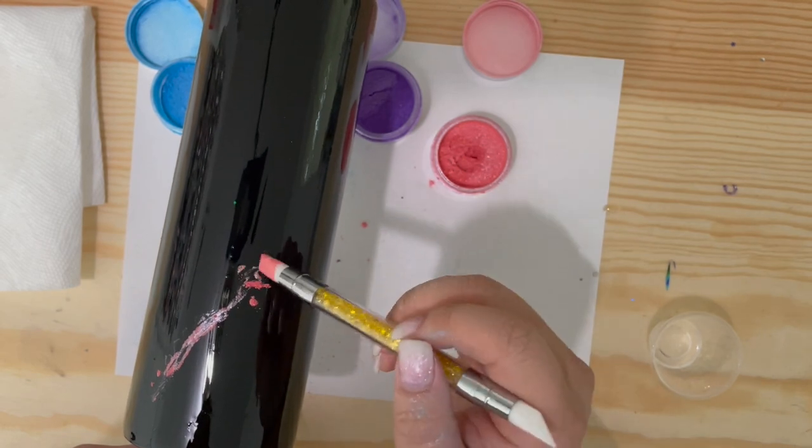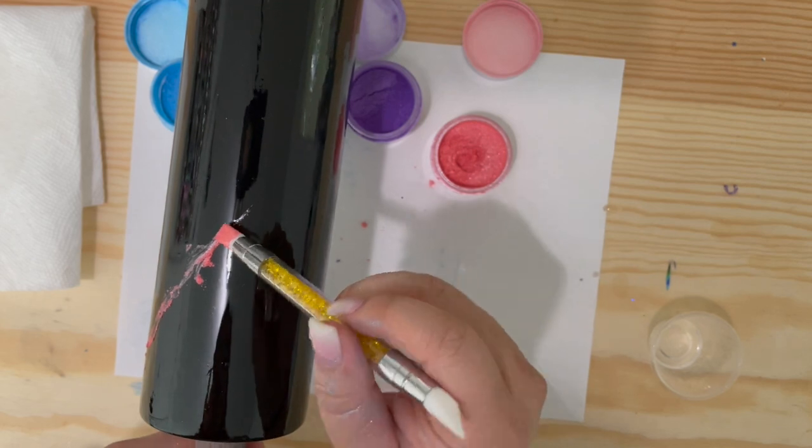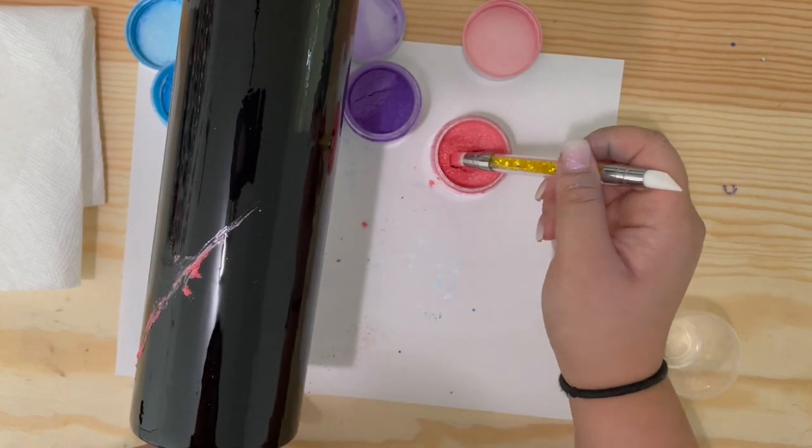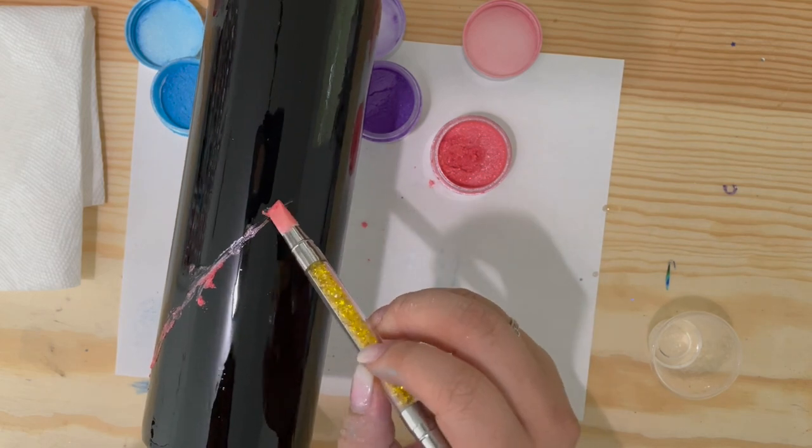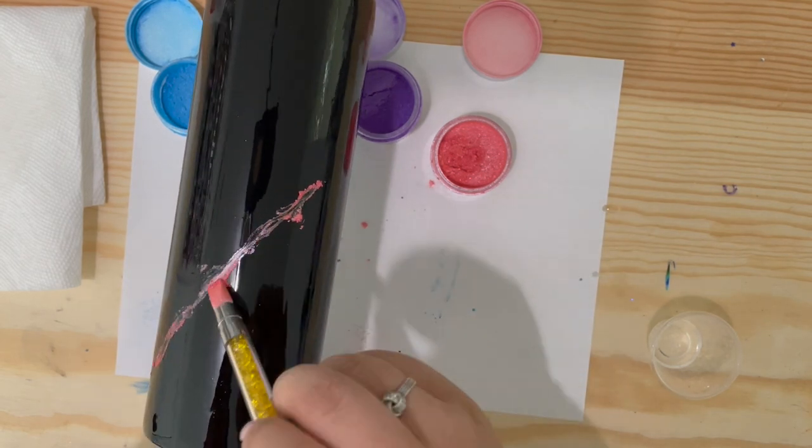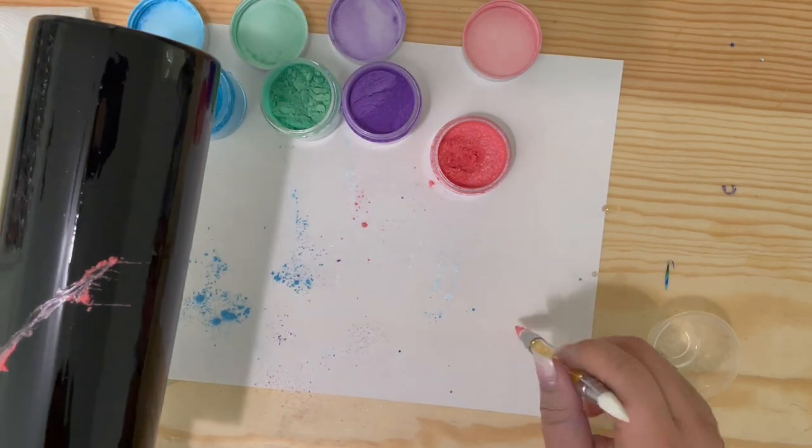I am going to take a paintbrush that I don't really care for because you're going to be putting your mica powder and you're going to be touching the tumbler with it. So if you have a paintbrush, like your favorite paintbrush, I recommend do not use it unless if you know you're going to clean it afterwards. I ended up tossing my paintbrush after this tumbler was done.